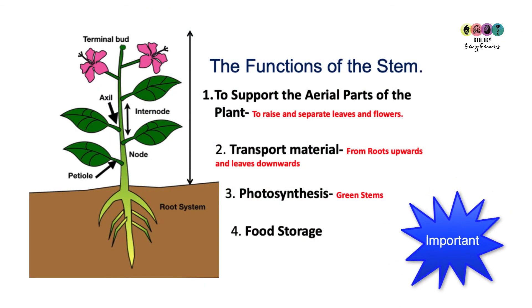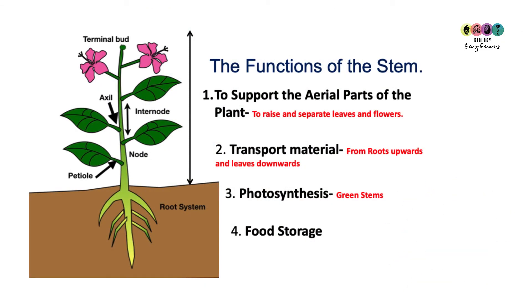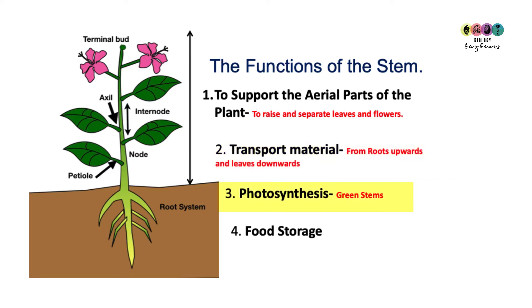It's really important that you can list four functions of the stem. Number one: to support the aerial parts of the plant. Number two: transport material upwards from the roots and downwards from the leaves. Number three: photosynthesis. Number four: food storage.